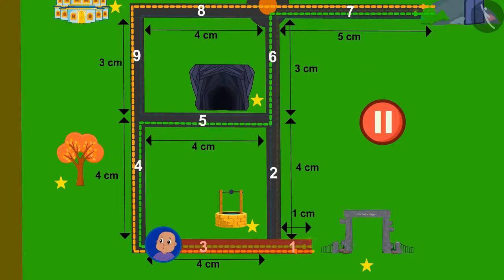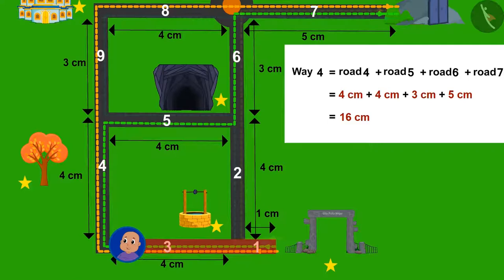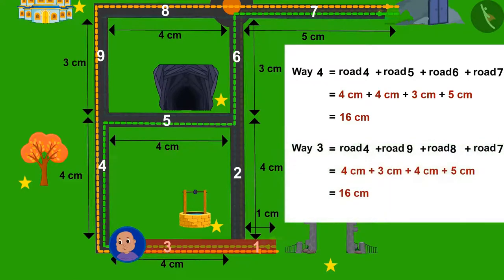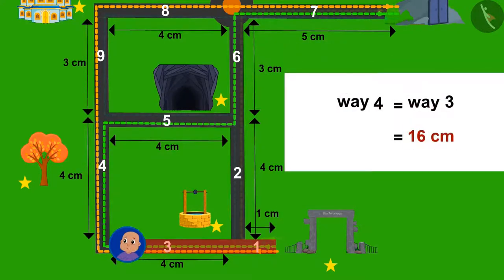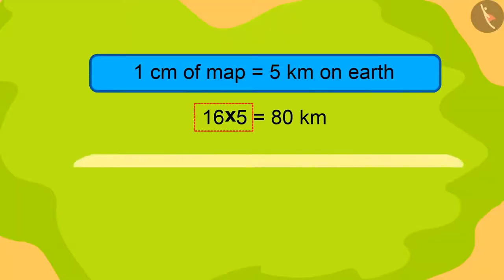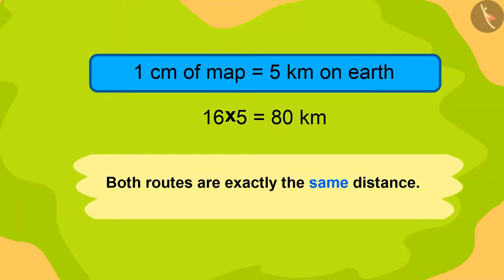Find an answer to this question by pausing the video. Absolutely right. Both paths are exactly at the same distance. The total distance on the map is 16 centimeters. So, the actual distance would be 16 multiplied by 5, that is 80 kilometers.